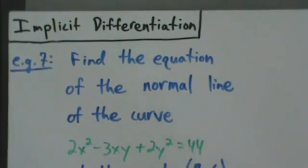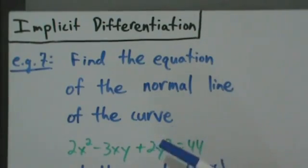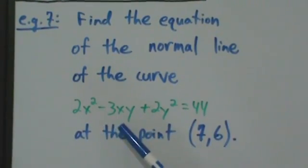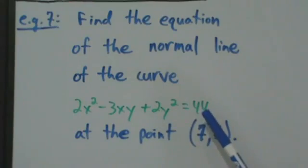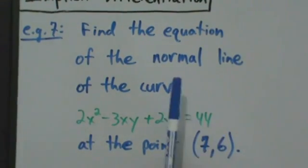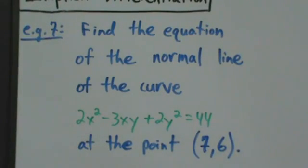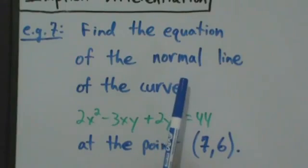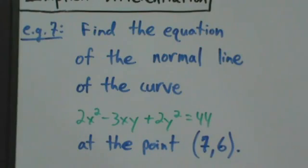Here's example 7 with implicit differentiation. We're going to find the equation of the normal line of the curve 2x squared minus 3xy plus 2y squared equals 44 at the point (7, 6). In example 6, we found the equation of the tangent line. Here in example 7 we're doing the normal line. A tangent line lies tangent to the curve at one point, but a normal line is the line that's perpendicular to the tangent line.